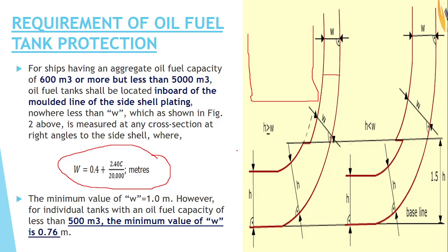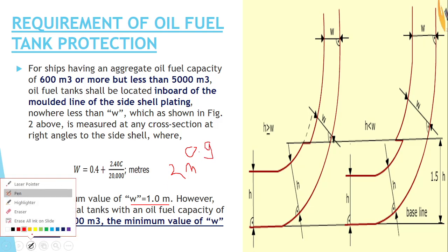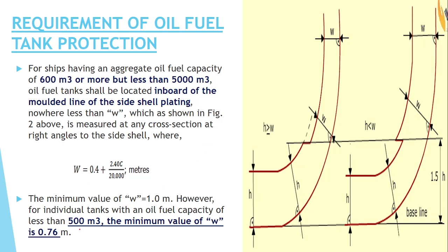So if the formula gives 2 metres, you can take 1 metre. But if it gives 0.9m, you cannot take 0.9m — you have to take 1 metre. The second case says: if your fuel oil capacity is less than 500m³, in that case you can take 0.76m.